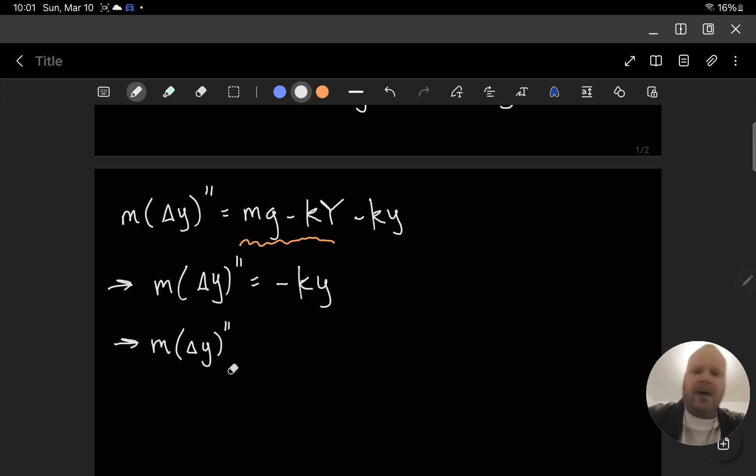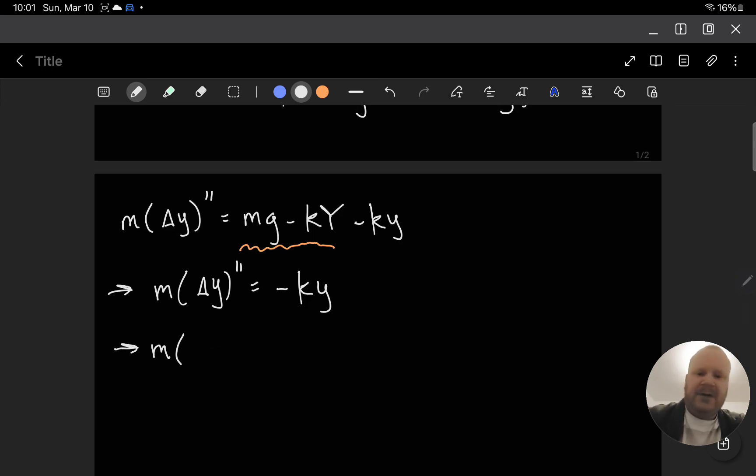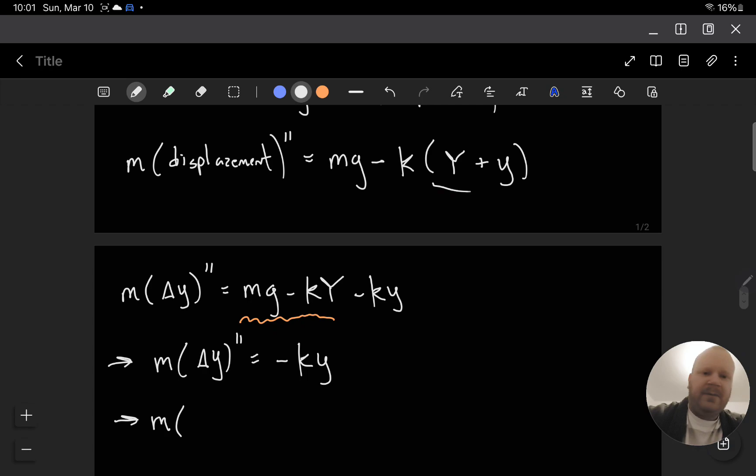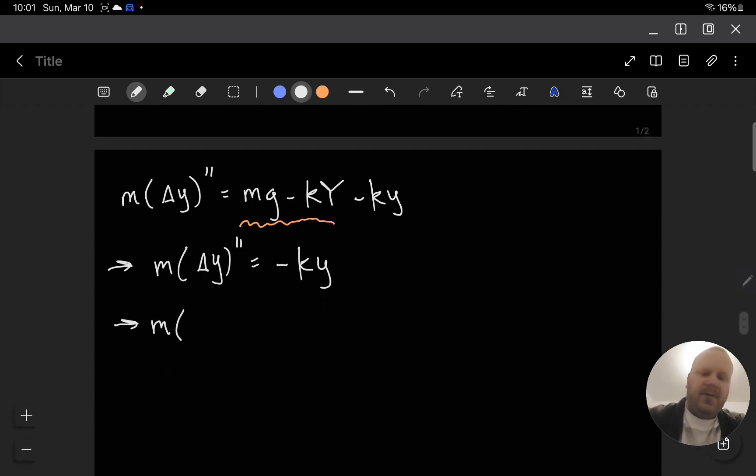Now this displacement, again, we can use this in the same way. So I replaced the displacement here with capital Y plus Y. But when we take that second derivative of this, we only include the Y in here. We only include the little Y in there. This is Y double prime equals K little Y. So we get this result.